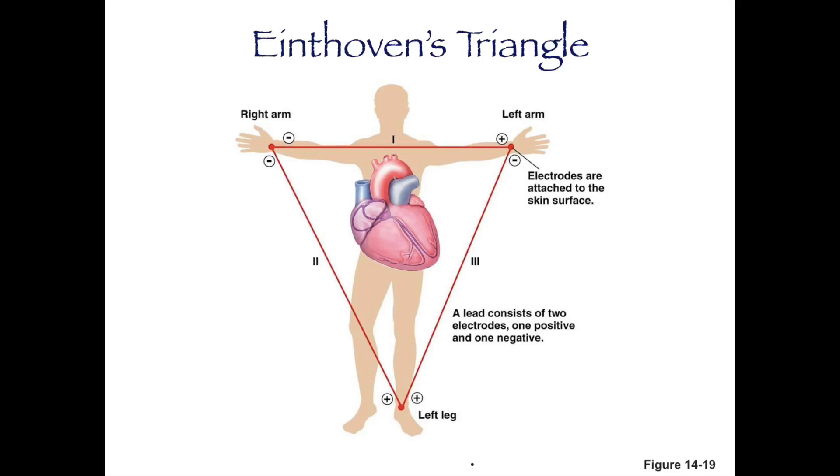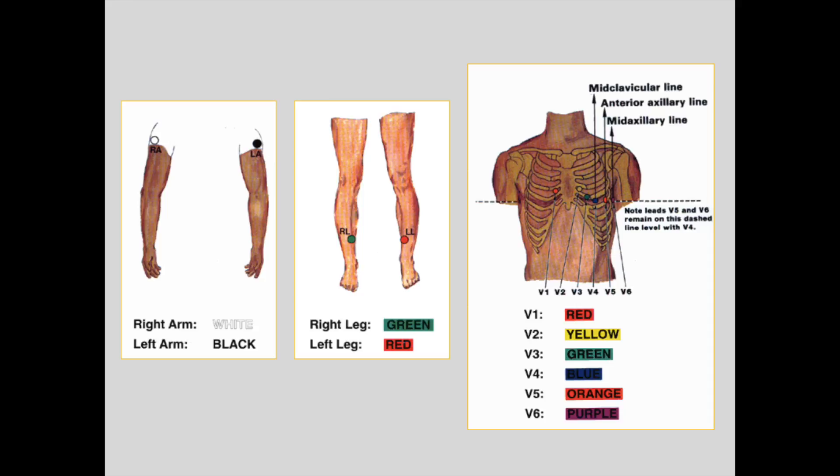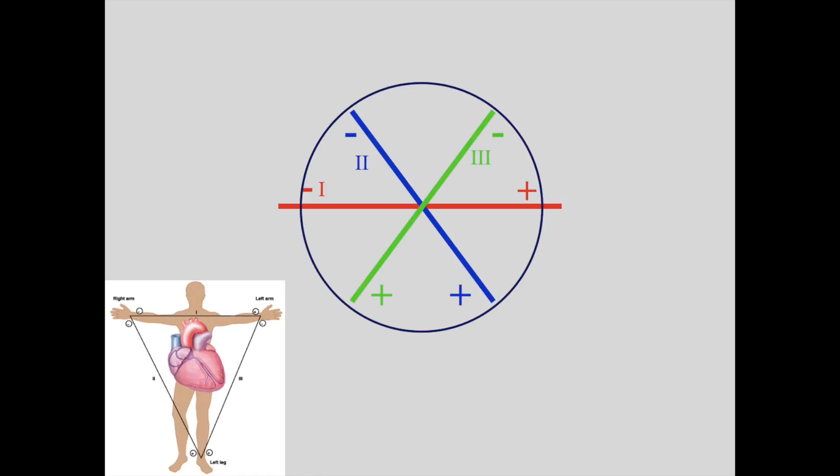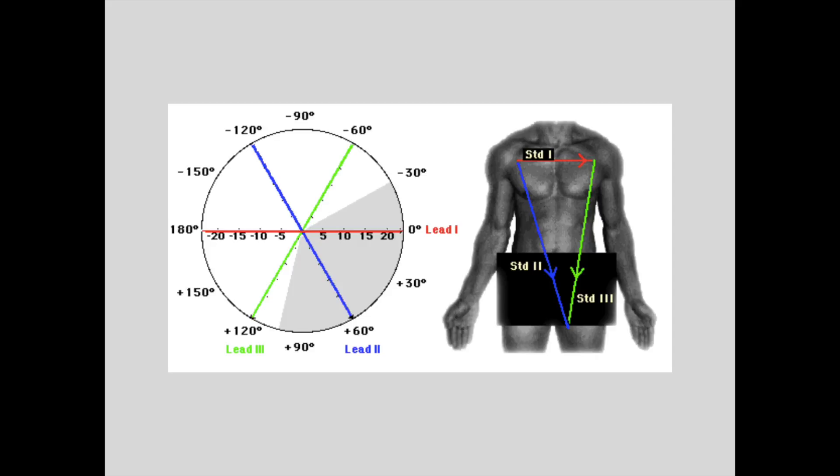When performing an ECG, the electrodes are attached in three places on the body forming an imaginary triangle: the right arm, left arm, and left leg. Each lead consists of a positive and negative electrode. By looking at the depolarization of the heart from different leads or views, we can see how the depolarization travels in space, which can be used diagnostically to tell us information about the heart.